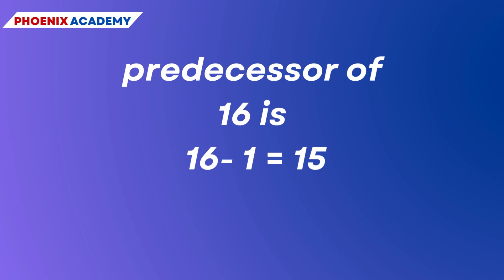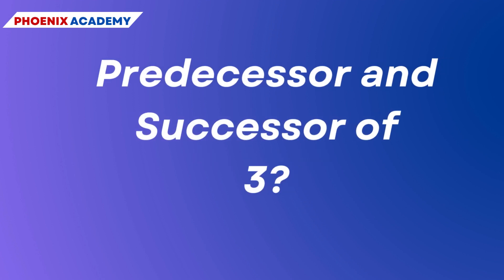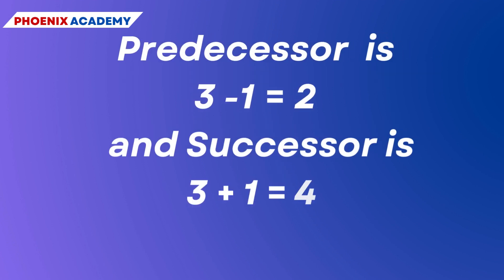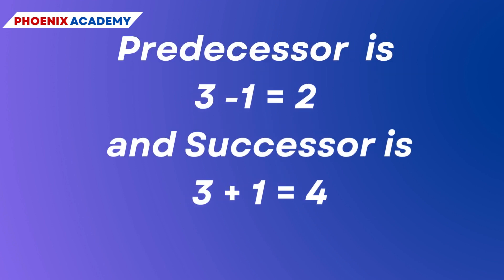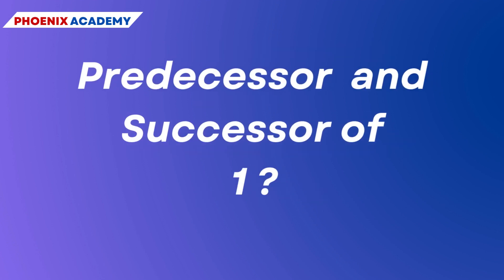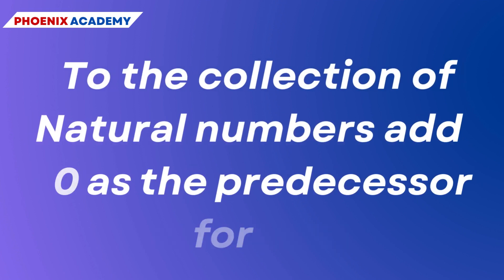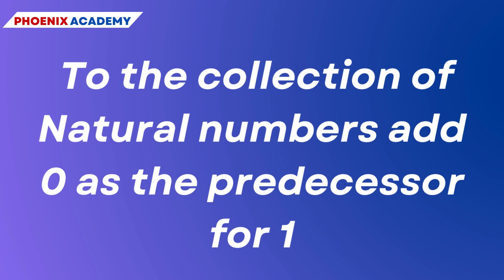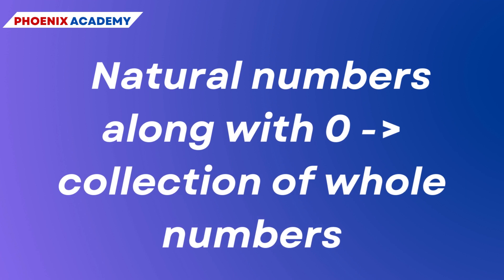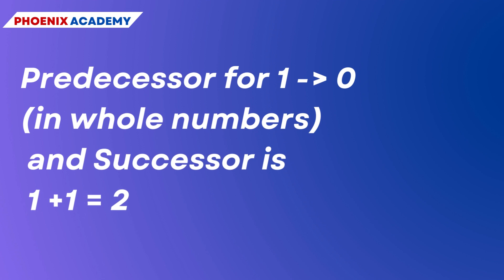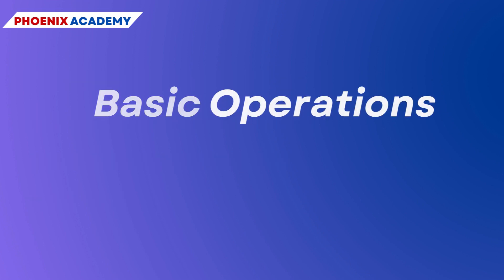In this way we can find the predecessor and successor of any natural number. For example, the predecessor of 3 is 2 and the successor is 4. Does 1 have both a successor and a predecessor? We know that 1 has no predecessor in natural numbers. So we add 0 as the predecessor for 1. The natural numbers along with 0 form the collection of whole numbers, and in whole numbers the predecessor of 1 is 0.